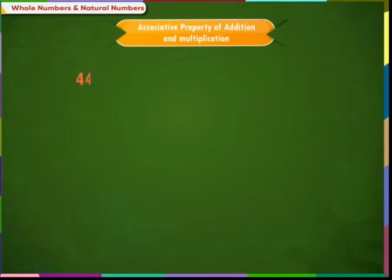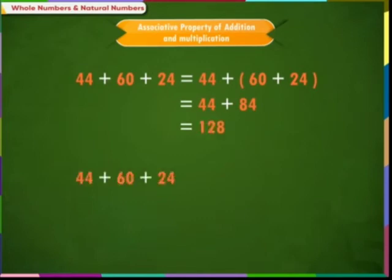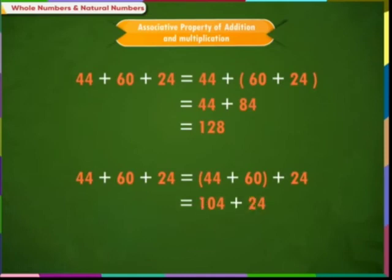For addition, let us add 44 plus 60 plus 24. First, associating the last two numbers: 60 plus 24 equals 84, so 44 plus 84 equals 128. Now associating the first two numbers: 44 plus 60 equals 104, so 104 plus 24 equals 128. Thus we conclude that whether we associate the first two or the last two numbers, the answer in both cases is the same.